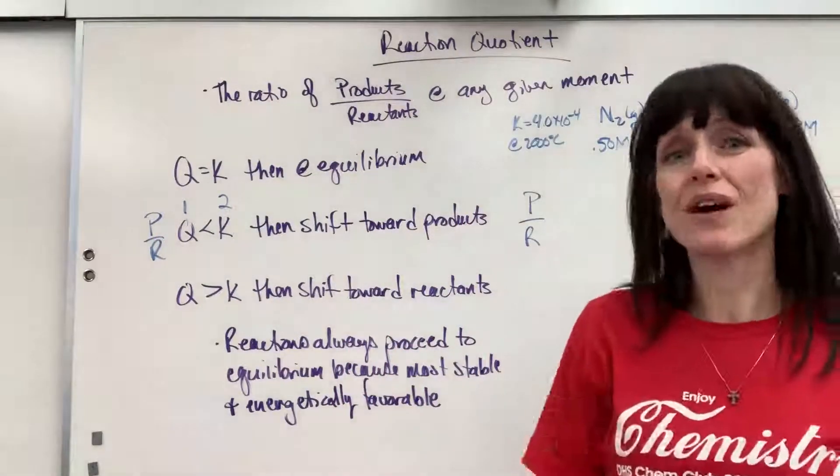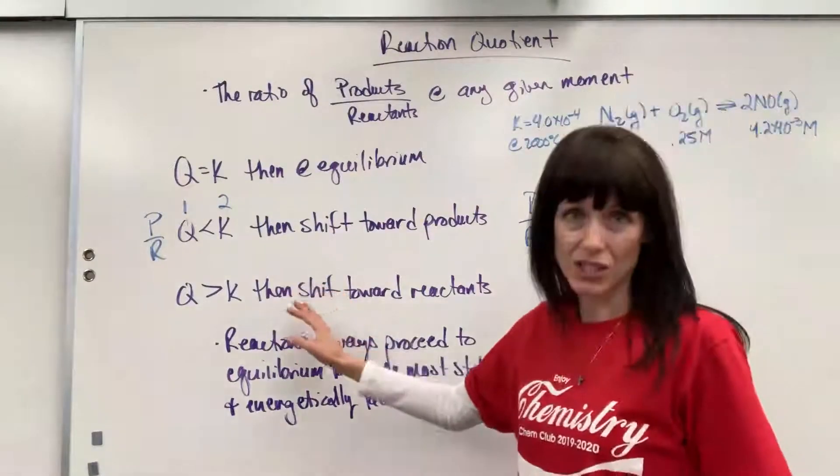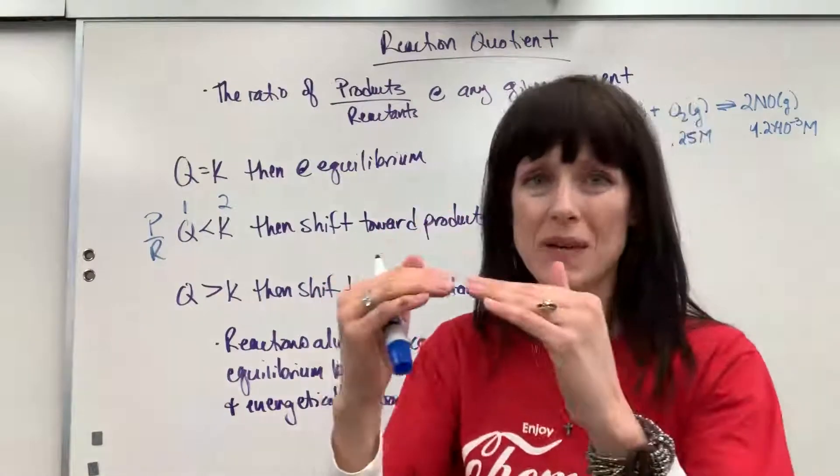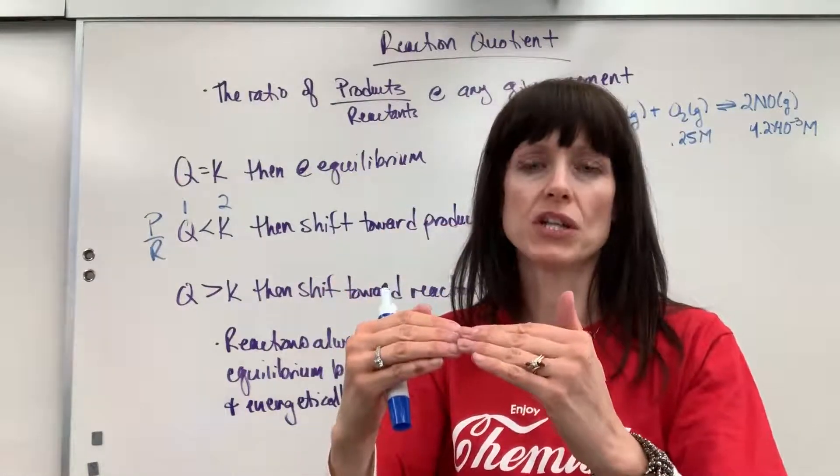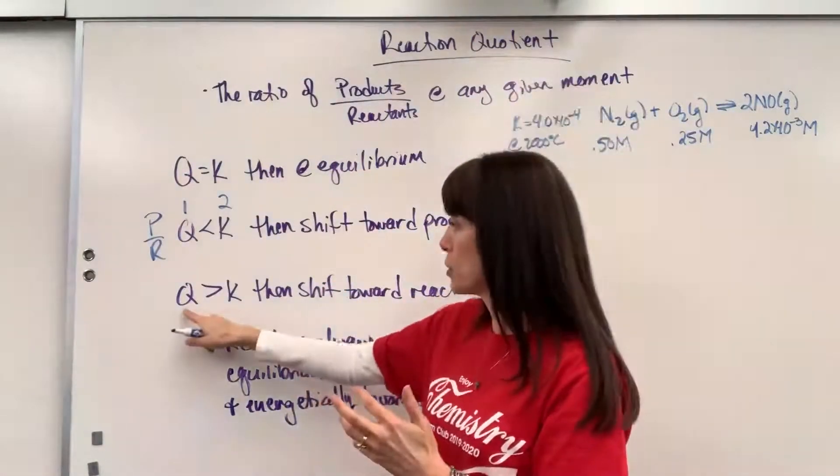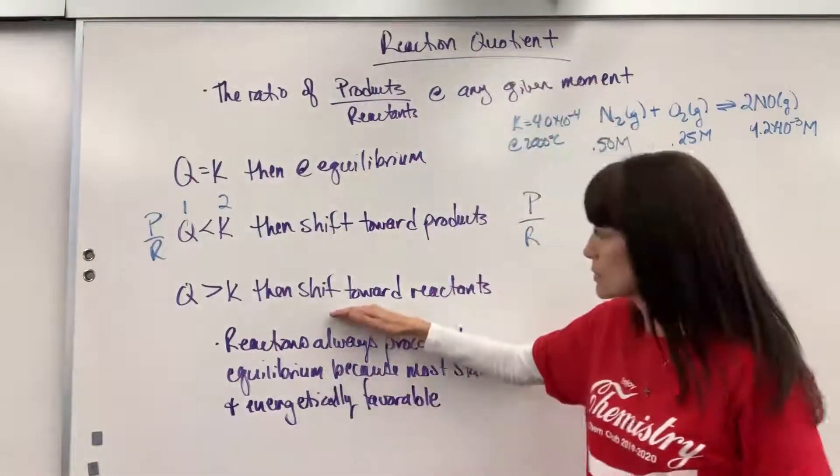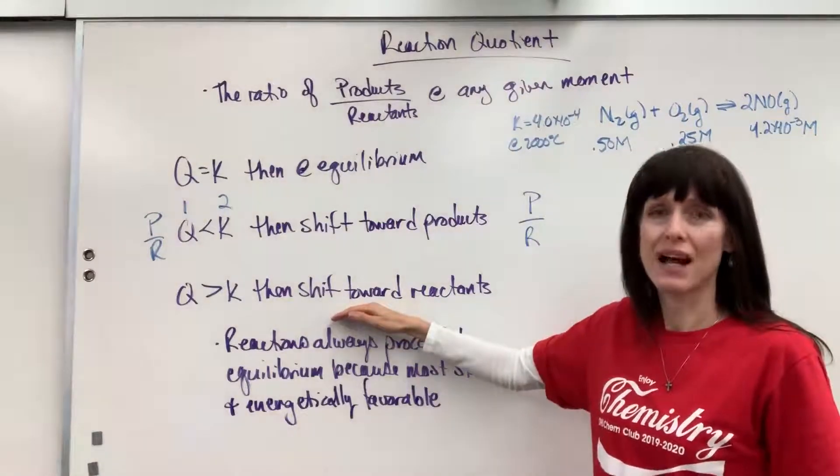Let's look at the next one. If Q is larger than K, which way is it going to shift? Because we know it's going to end up at K. We just happen to jump in, take a picture of all of the concentrations, and Q is bigger than K. We're not at equilibrium, but I know it will go to equilibrium. So here's what it will do. It will shift to the reactants.